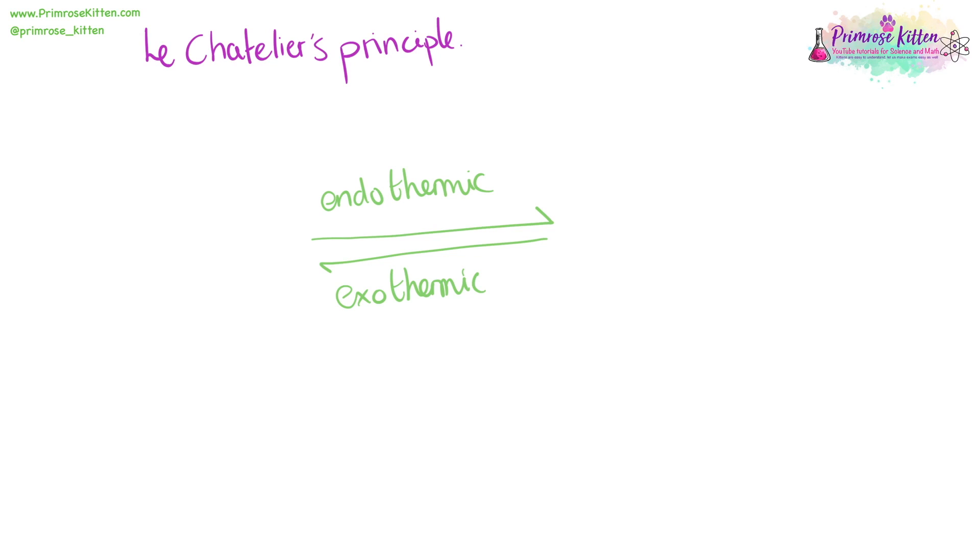Le Chatelier's principle tells us that whatever you do to a reversible reaction, the reaction will do the opposite. So in this reaction, this way is endothermic and this way is exothermic. So if you heat up a reaction, the endothermic reaction will increase to compensate and the exothermic reaction will decrease. Whereas if you decrease the temperature, then the endothermic reaction will decrease and the exothermic reaction will increase so that the overall temperature stays the same.